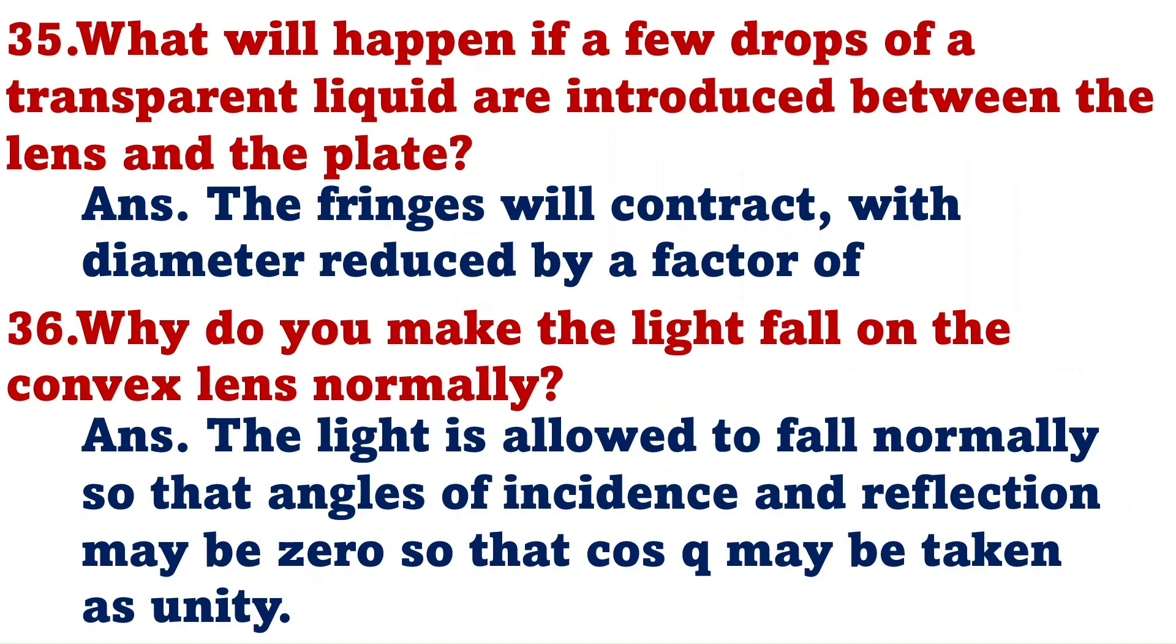What will happen if a few drops of transparent liquid are introduced between the lens and plate? The fringes will contract with the diameter reduced by a factor. Why do you make the light fall on the convex lens normally? The light is allowed to fall normally so that the angle of incidence and reflection may be zero, so that cos theta may be taken as unity.